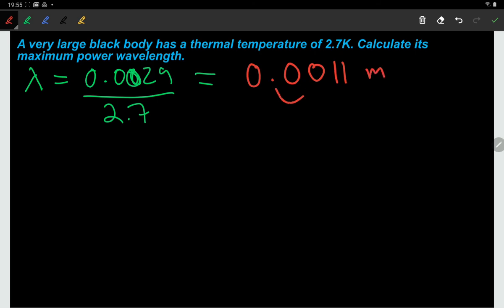So what is that? It's 1.1 millimeters. Now if you look that up, that is actually a wavelength that corresponds to microwaves. So what could it be that's emitting microwaves that's a very large black body?